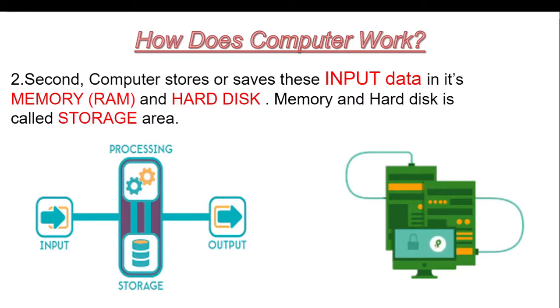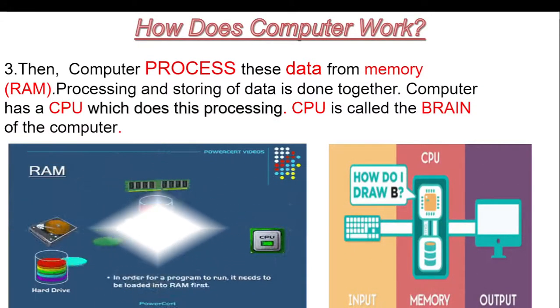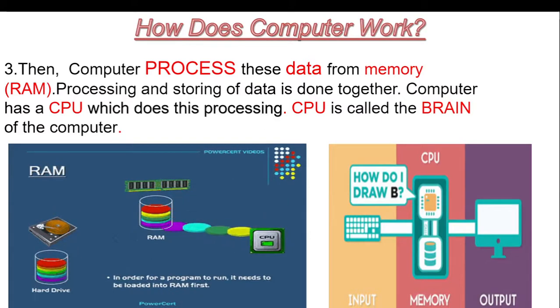Then, computer processes this data from memory (RAM). Processing and storing of data is done together. Computer has a CPU which does this processing. CPU is the brain of the computer.